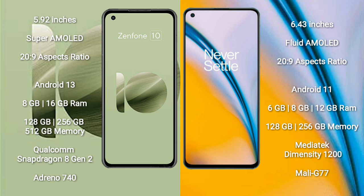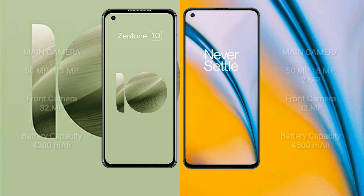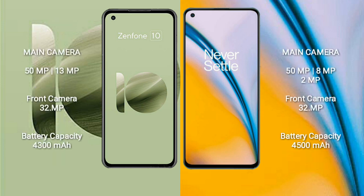The Asus Zenfone 10 features a dual rear camera setup with 50MP and 13MP lenses, and a 32MP front camera. The OnePlus Nord 2 features a triple rear camera setup with 50MP, 8MP, and 2MP lenses, and a 32MP front camera.